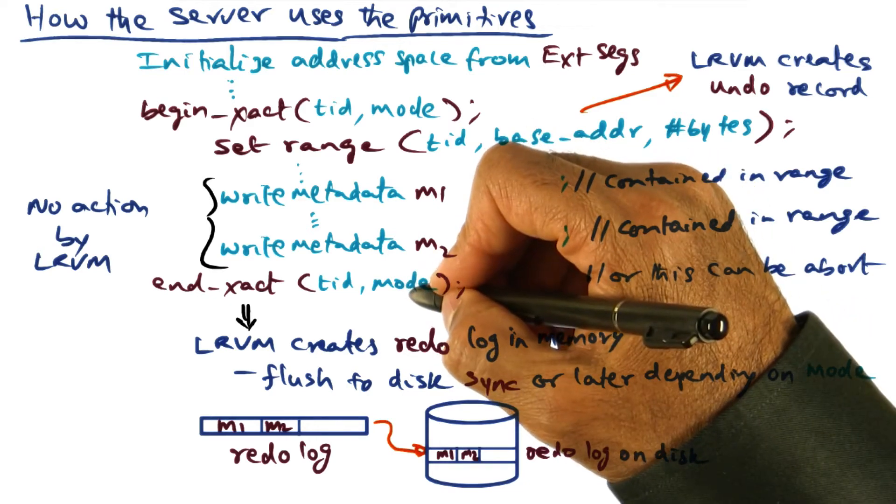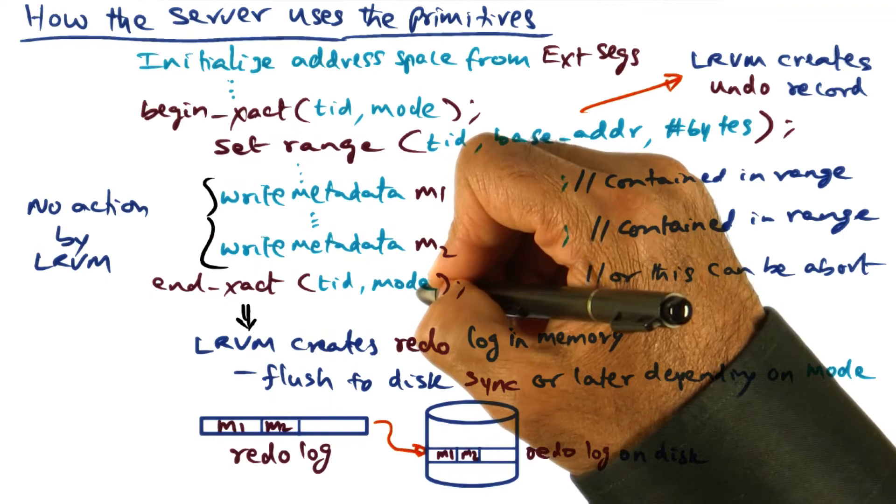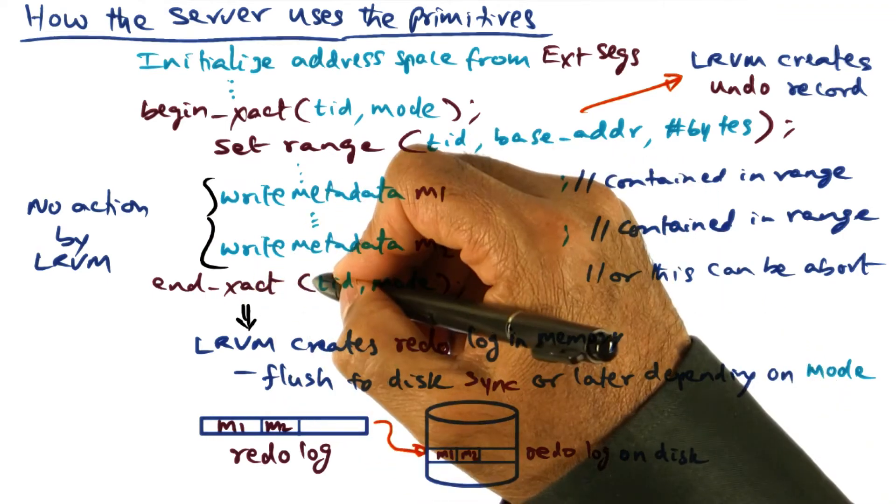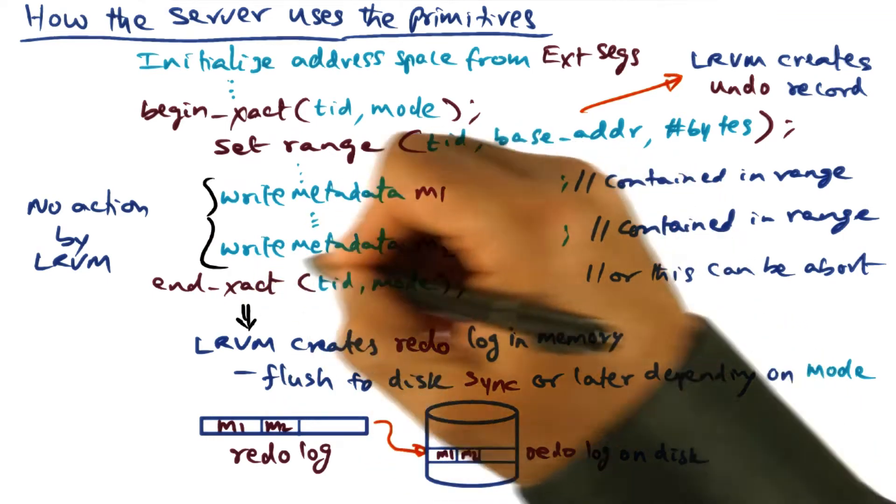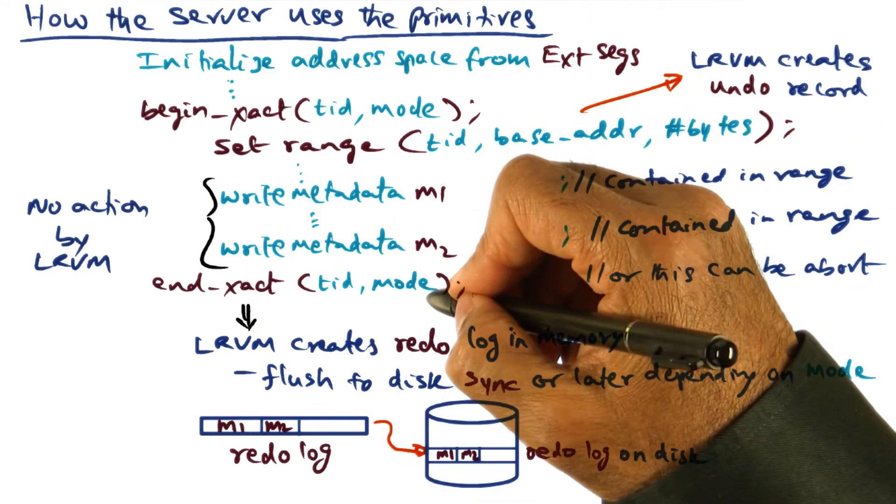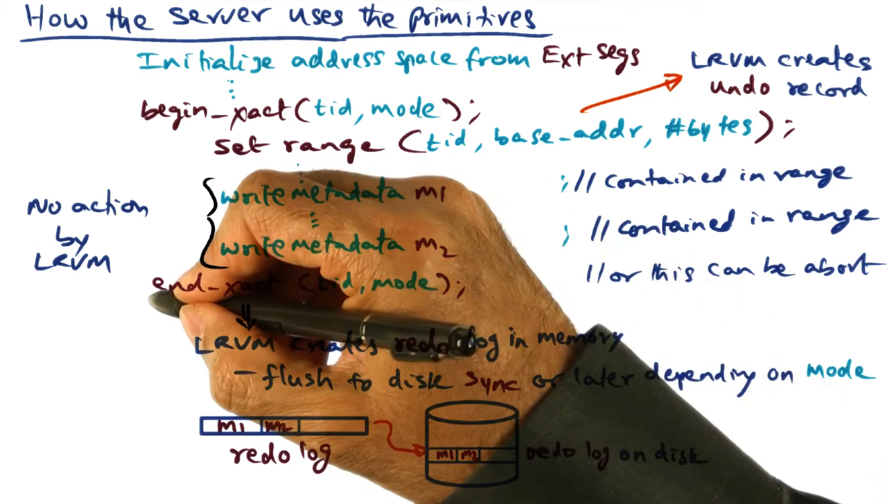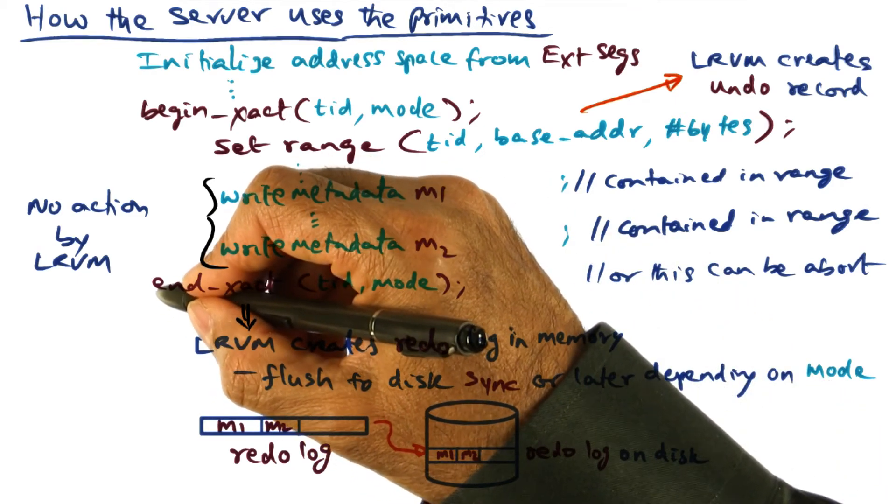then you can go ahead and say as a developer that, at the point of end transaction, I want you to commit it. By the way, you don't have to block me. In other words, this mode, if it says no flush, it is saying that, yes, I want you to commit it to the disk, but don't block me from going further.